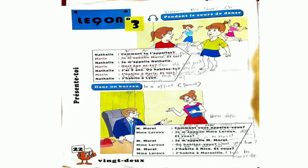Marie: Quelle age as tu? (How old are you?) Nathalie: J'ai neuf ans. (I am 9 years old.) Où habites tu? (Where do you live?) Marie: J'habite en Paris. Et toi? Nathalie: J'habite en Lyon. (I live in Lyon.)